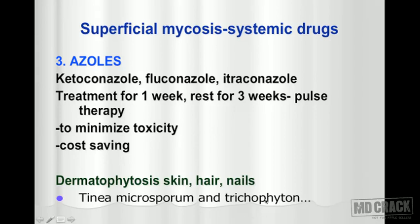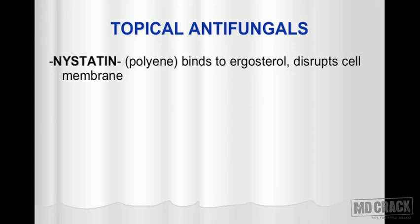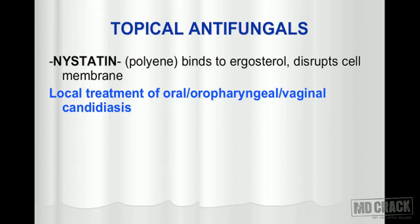Now we move on to topical antifungal agents, used when the infection is superficial and topical treatment is sufficient. An important drug in this group is nystatin, a polyene antibiotic from the same group as amphotericin B. Its mechanism — binding to ergosterol and producing artificial pores that disrupt the cell membrane — is exactly the same as amphotericin B. Nystatin is especially useful for local treatment of oral, oropharyngeal, and vaginal candidiasis.